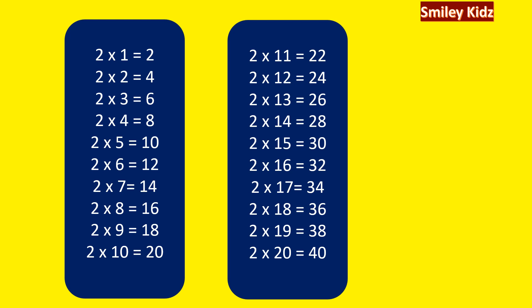2 elevens are 22. 2 twelves are 24. 2 thirteens are 26. 2 fourteens are 28. 2 fifteens are 30. 2 sixteens are 32. 2 seventeens are 34. 2 eighteens are 36. 2 nineteens are 38. 2 twentys are 40.